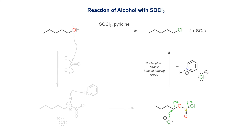The last step of this chlorination procedure involves the nucleophilic chloride ion displacing the sulfonate leaving group in a bimolecular process to give the alkyl chloride. The leaving group collapses, in an irreversible manner, to sulfur dioxide, and the associated chloride anion balances the pyridinium ion formed earlier.